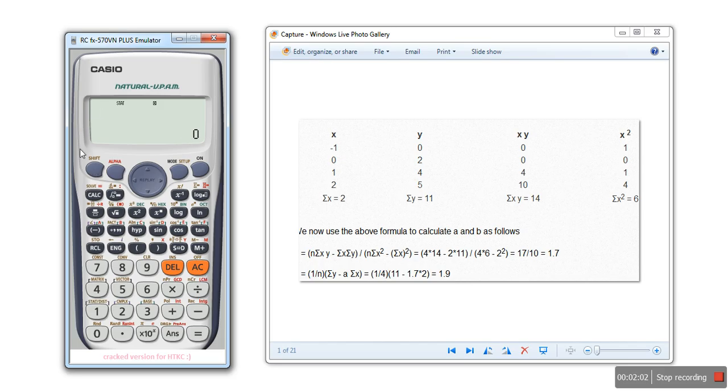Now let's see the value of b. Again, press the shift key, press key 1, go to regression, and now go for b by pressing 2. The value is 1.7, which is the second parameter.